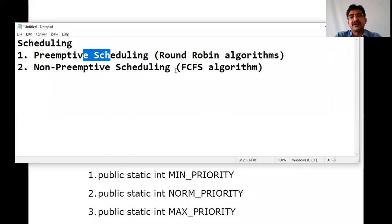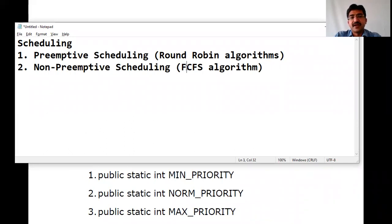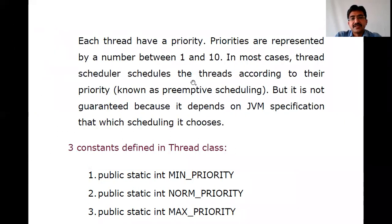Non-Preemptive scheduling is First-Come, First-Serve: whoever comes first will access the resources or service first. This thread scheduling according to their priority is known as Preemptive Scheduling, but it is not guaranteed because it depends on the JVM specification as to which scheduling it chooses.